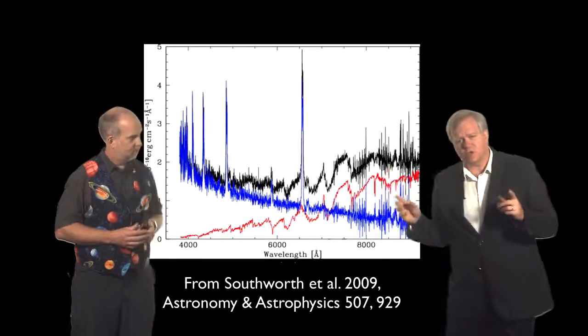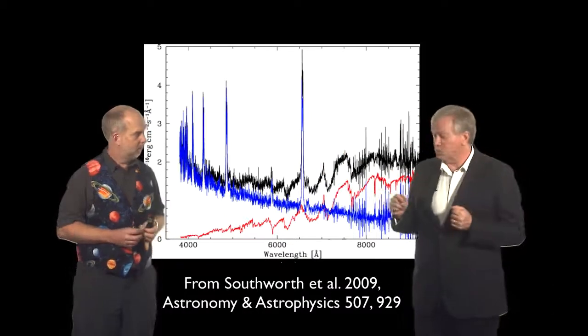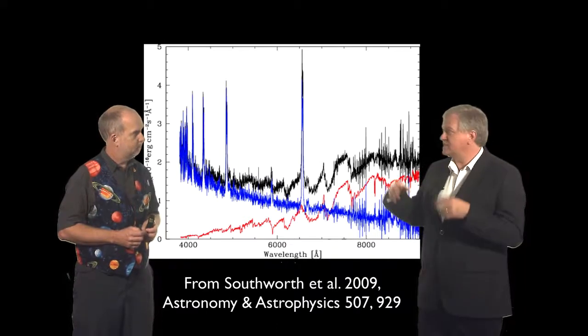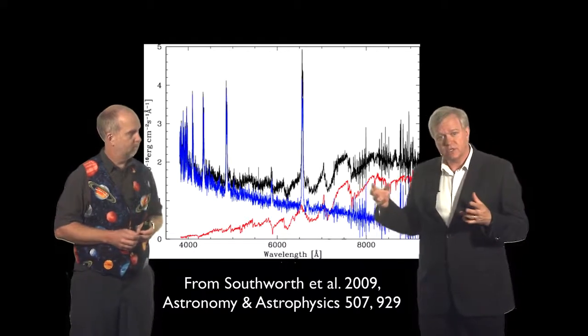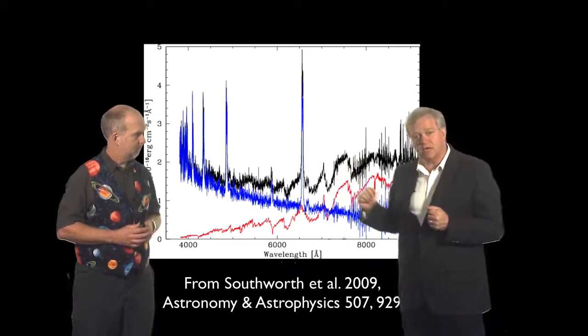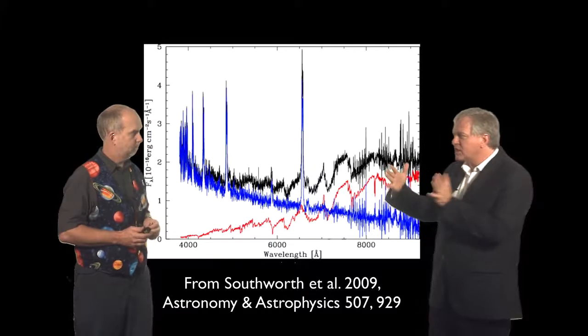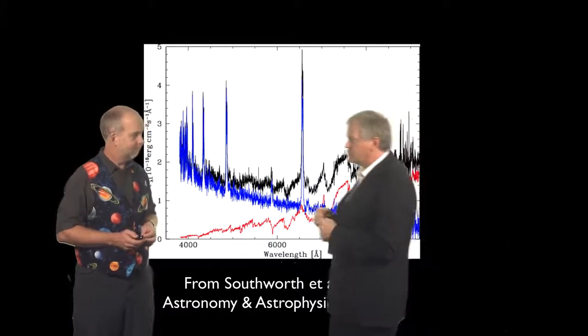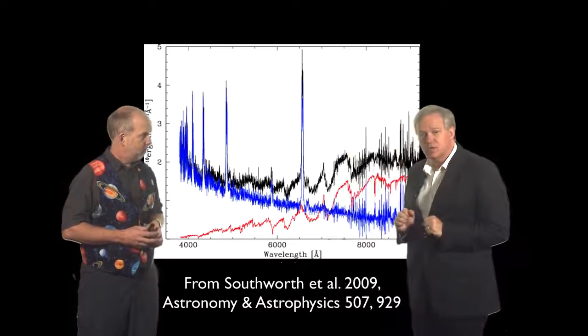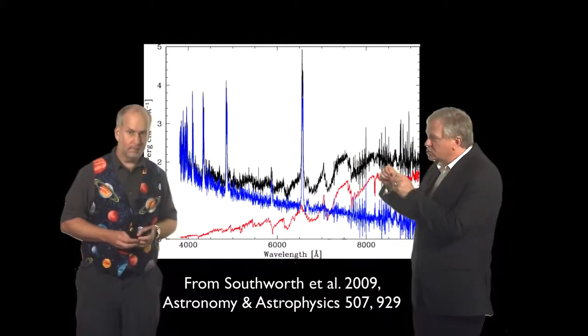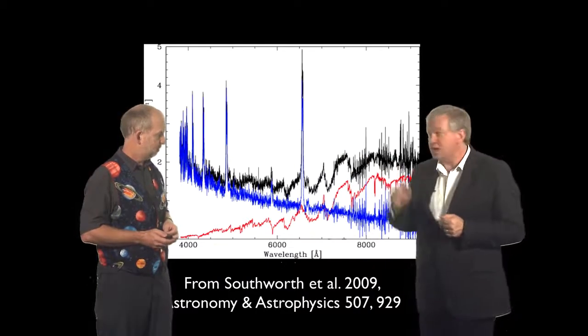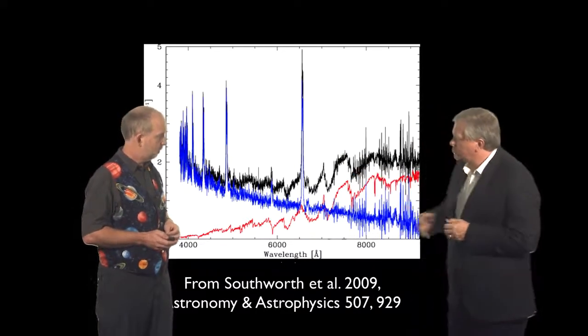Whenever you have something that emits waves, whether sound or light, if you're moving relative to the speed of sound or light, you compress the waves in the direction of motion or stretch them against it. We can use that stretching - in this case a color shift or wavelength shift - to measure the velocity very accurately. So what do we see in this case?